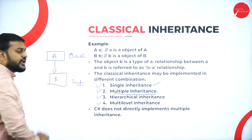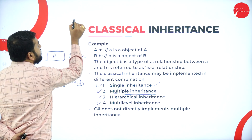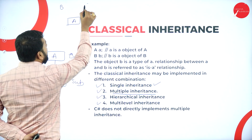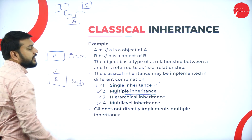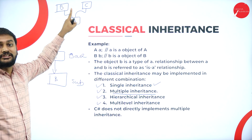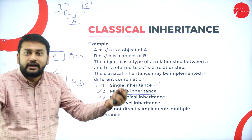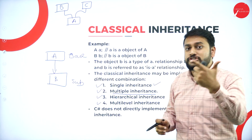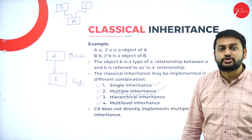The second type is multiple inheritance. Imagine I have A, B, and C as base classes. I am inheriting properties from more than one base class into one subclass. Such a kind of inheritance is called multiple inheritance.